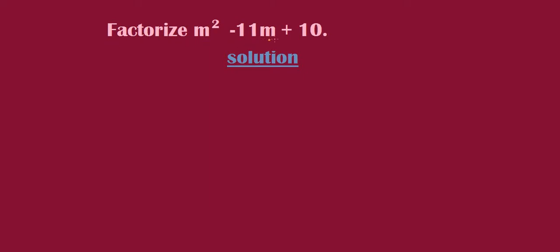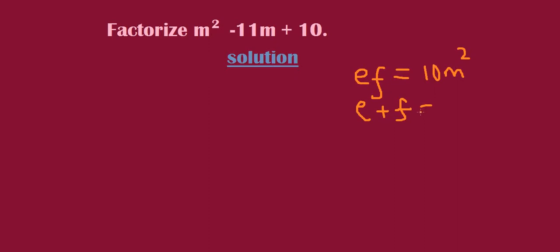Factorize m squared minus 11m plus 10. We are going to find two numbers — let those two numbers be e and f. When you multiply e by f, they should give us m squared times 10, which is 10m squared. When we add e plus f, they should give us the middle term, which is negative 11m.